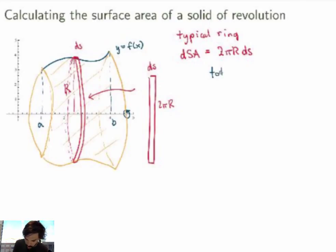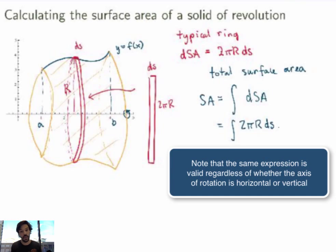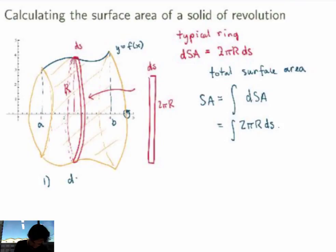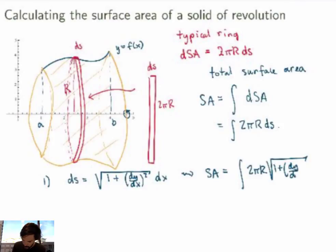To get the total surface area of the solid, I sum up all the rings, which means I'm integrating. So the surface area equals the integral of dSa, which is the integral of 2πr ds. Now ds is the line element we saw before. If you want to integrate in the x direction, you write ds as √(1 + (dy/dx)²) dx, and then the surface area equals the integral of 2πr times that expression dx.